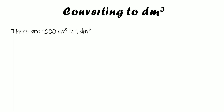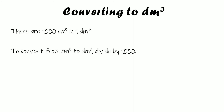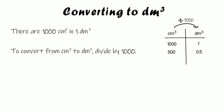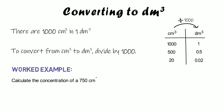We've been using decimetres cubed for volume, but sometimes you'll need to convert from centimetres cubed. 1000 cm³ equals 1 decimetre cubed, so divide your cm³ value by 1000. For example: 1000 cm³ = 1 dm³, 500 cm³ = 0.5 dm³, and 20 cm³ = 0.02 dm³.